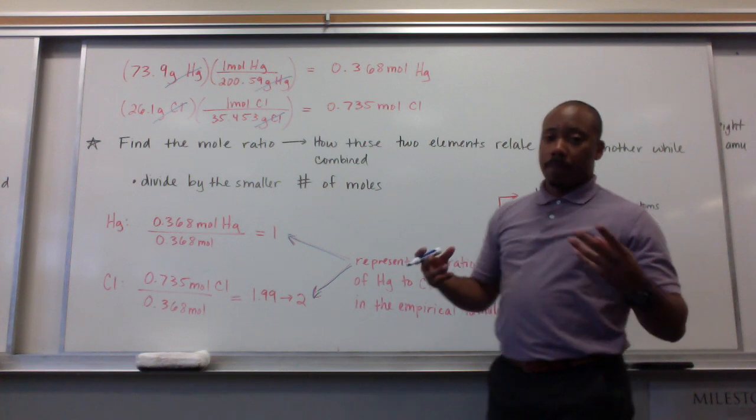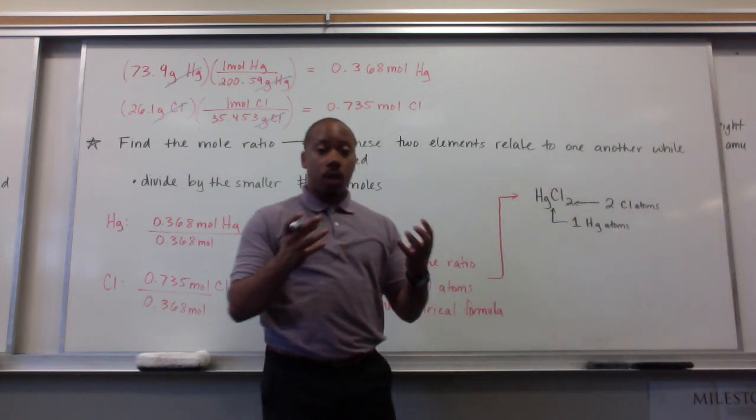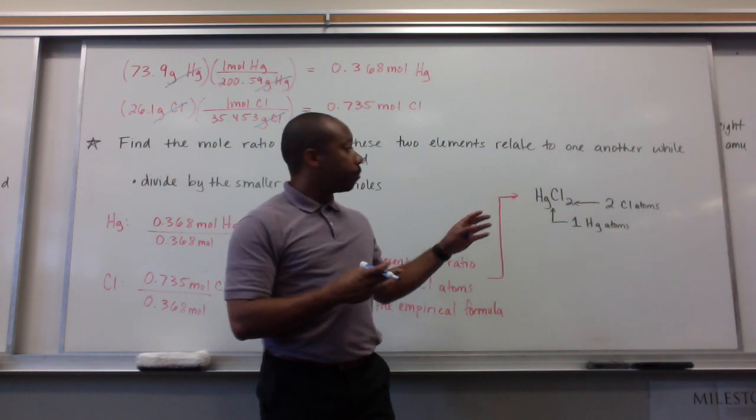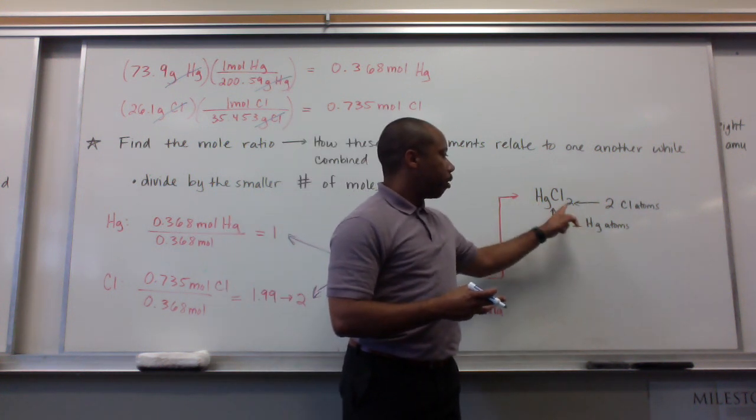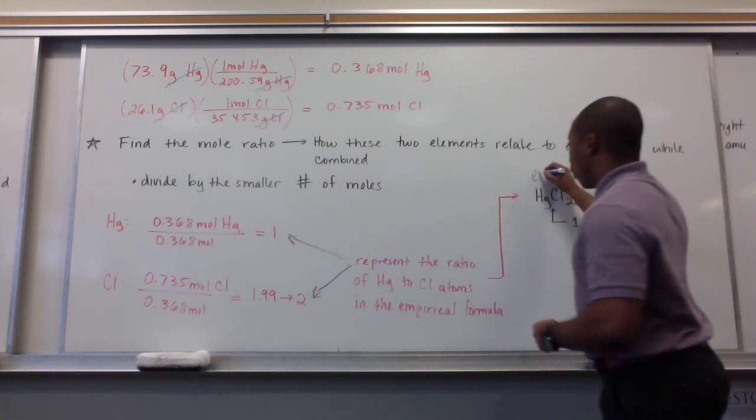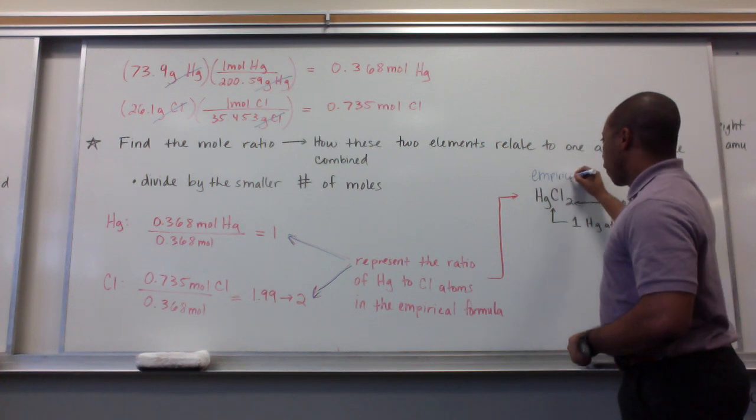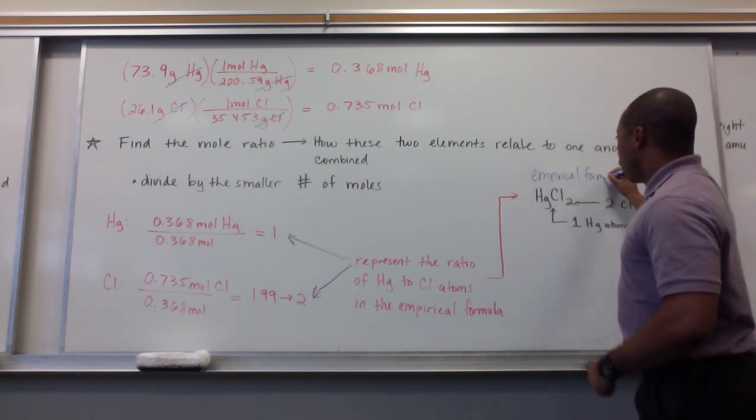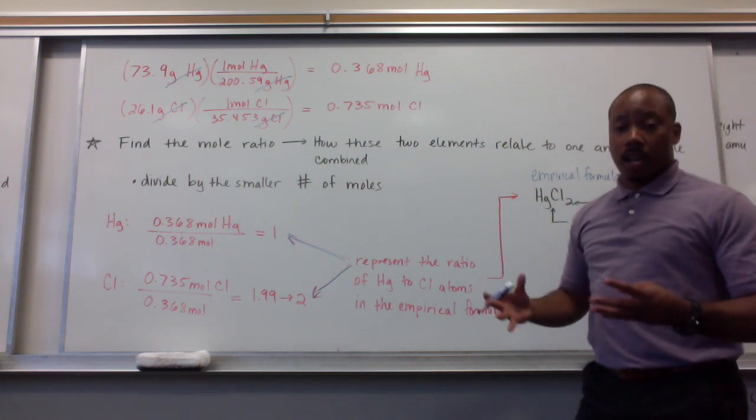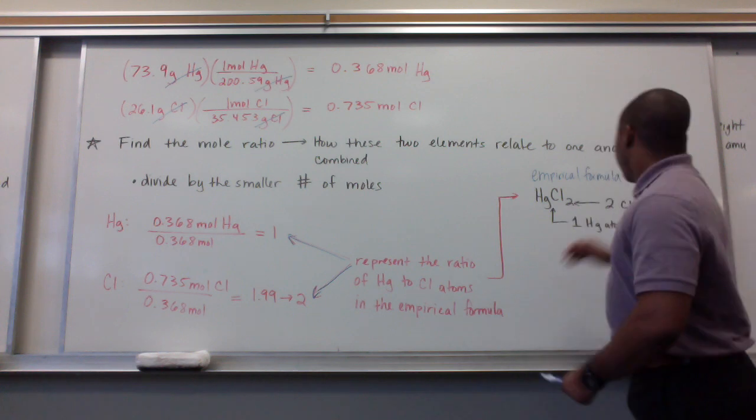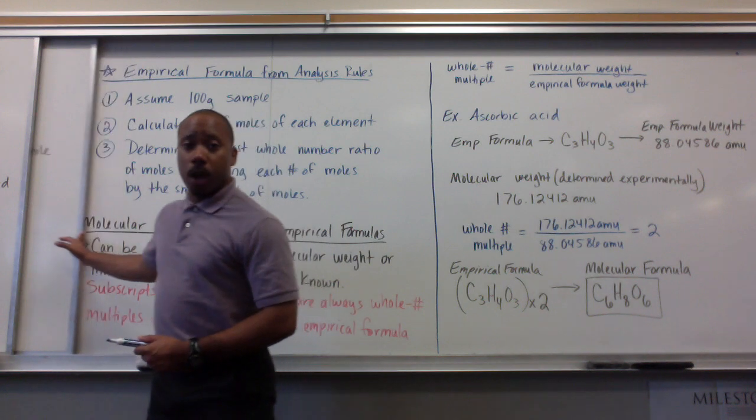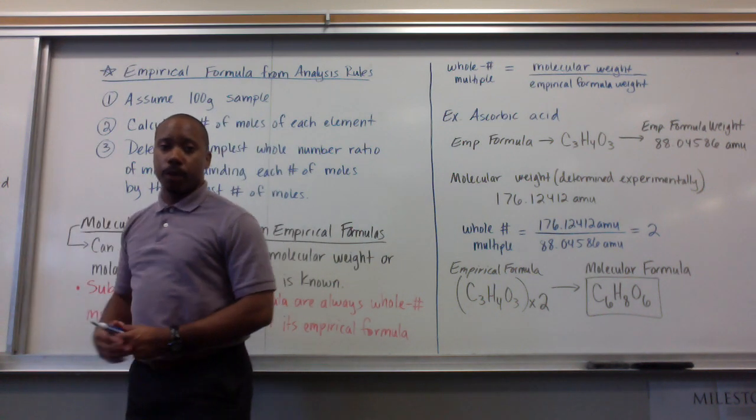These two numbers represent the ratio of mercury to chlorine atoms in that empirical formula when they're combined as a compound. And we know, in the empirical formula, if that's our whole number ratio of atoms, those represent our subscripts as well in the chemical formula. So, we have 1 mercury atom for every 2 chlorine atoms. And this would be the empirical formula, HgCl2. And it was discovered through analysis of the percent composition of this substance. Now, we just went through this problem, but there are some rules that you can jot down to help you navigate this for other problems as well.